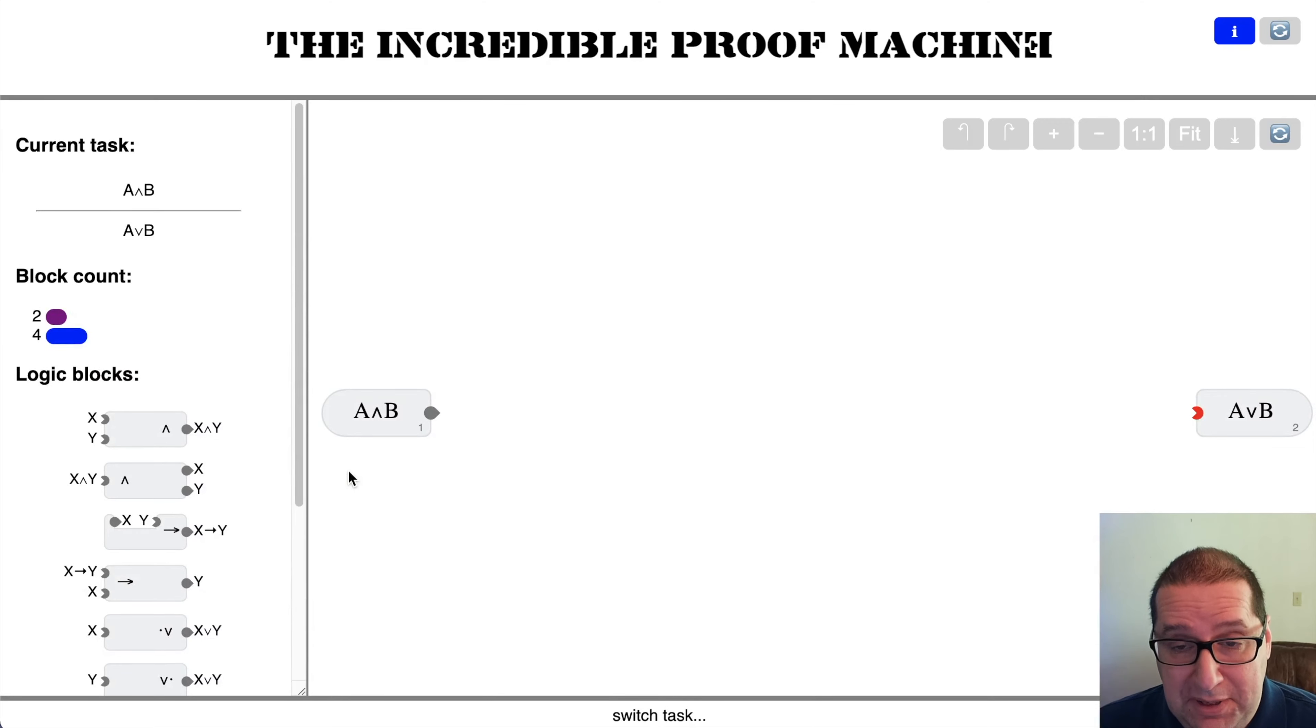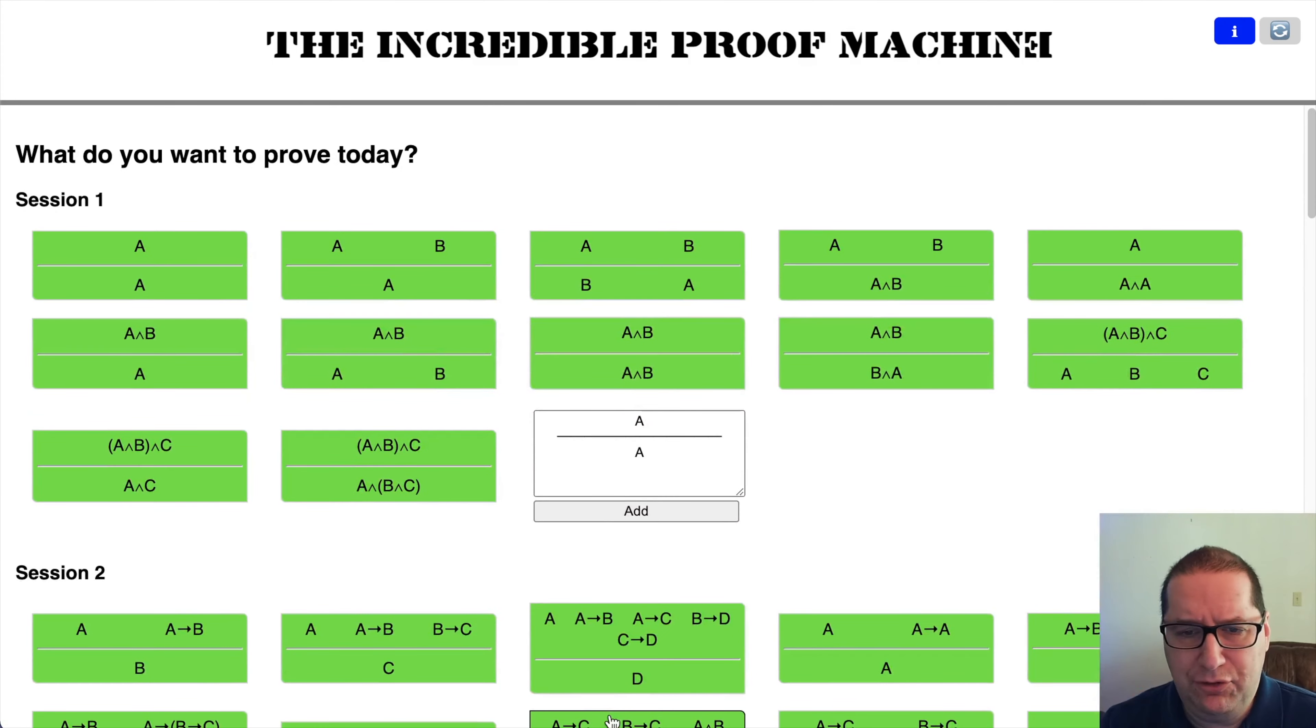Given A and B, prove A or B. That should be very easy, right? Because we can use an AND elimination that gives us A. We can use an OR introduction on the left that gives us A or B. Yay. I like the easy ones sometimes.